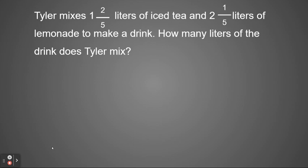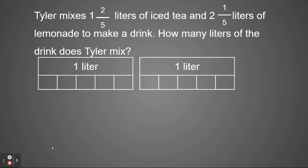We're going to start by looking at the first part: one and two fifths liters. A liter is broken into five parts, and since there's one whole and two fifths, we're going to use two bar models to show that. I'm going to write out one and two fifths and shade that into my bar model — one whole and two parts of the second liter.